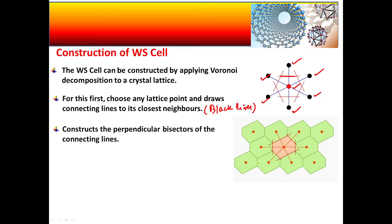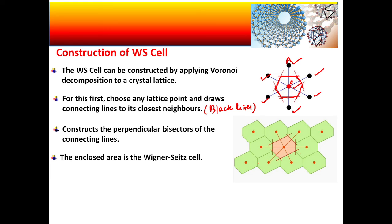For example, if the line from the central lattice point O to neighbor A is one connecting line, then you draw its perpendicular bisector. Similarly, you construct the second, third, fourth, fifth, and sixth perpendicular bisectors. The region that is enclosed by all these perpendicular bisectors represents the Wigner-Seitz cell.